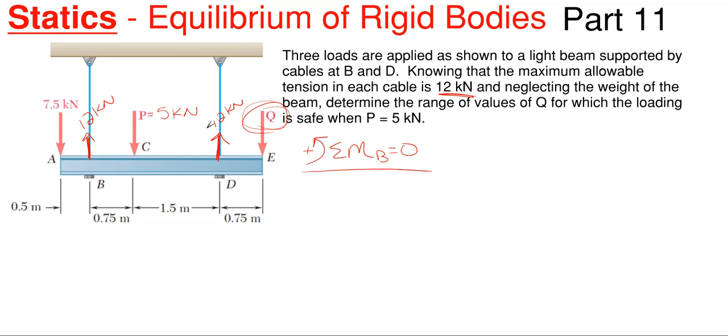So what this is going to give me is that if I sum moments about point B, the 12 kilonewtons that reacts through the cable in point B that is pulling back upwards will not occur in this equation, only this one at D. So this will give me the value of Q that will produce this 12 kilonewtons of reaction at point D. So let's work this through here.